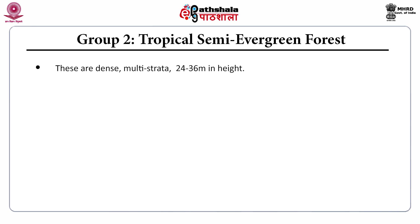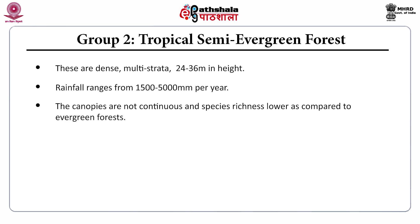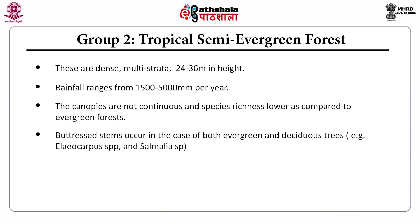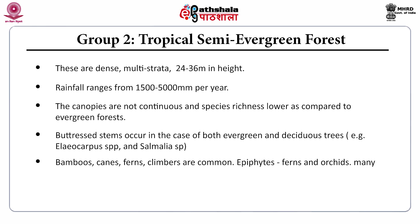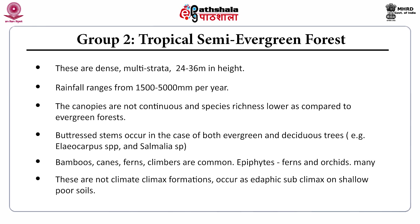These forests are dense and multistrata, with moderately high rainfall. The canopies are not continuous and species richness is lower compared to evergreen forests. There is the presence of buttressed stems in both evergreen and deciduous trees, for example Iliocarpus and Soymida species. Bamboos, canes, ferns, and climbers are present. Epiphytes are represented by ferns and orchids. These are not climax formations; they occur as derived sub-climax on shallow, poor soils.